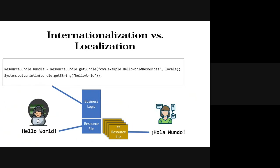That separation is important because software developers can focus on writing the business logic and source resource files for the user interface. There's another group — localizers, engineers, translators — who take those resource files and translate them into other languages to produce a product that's actually useful in another language or culture. We were hearing about Odalm a few minutes ago; one of the challenges is that there's no software in Odalm. This is how software gets into another language.